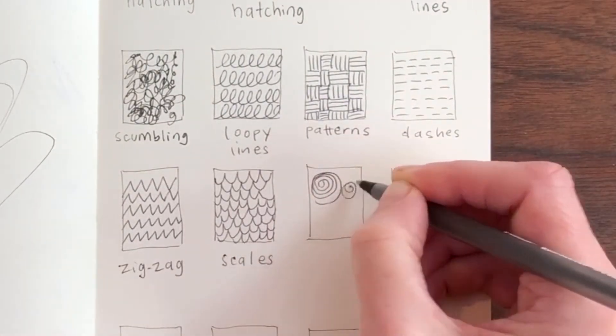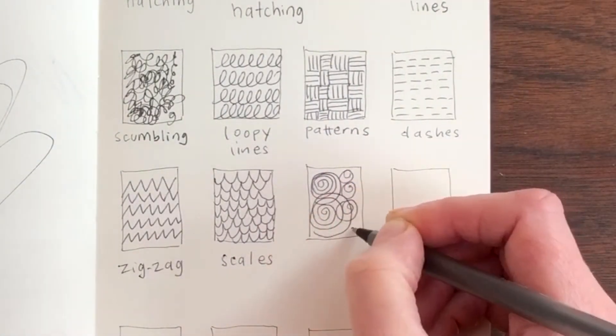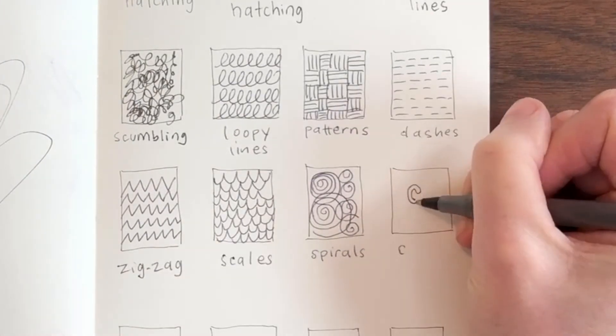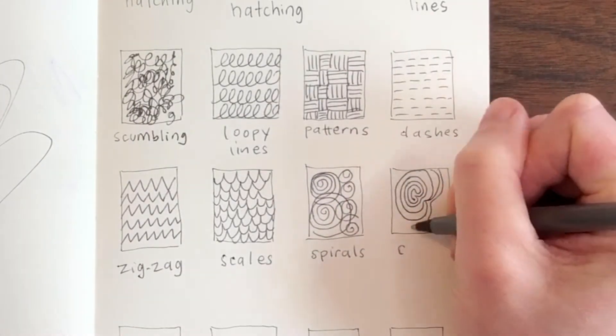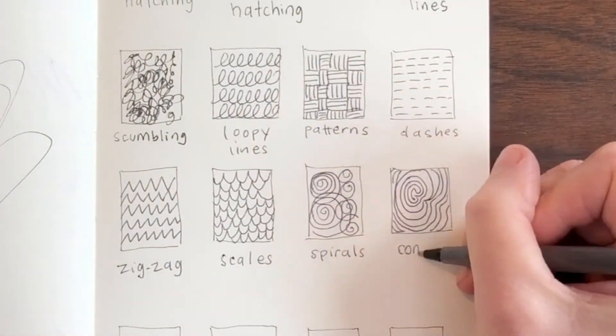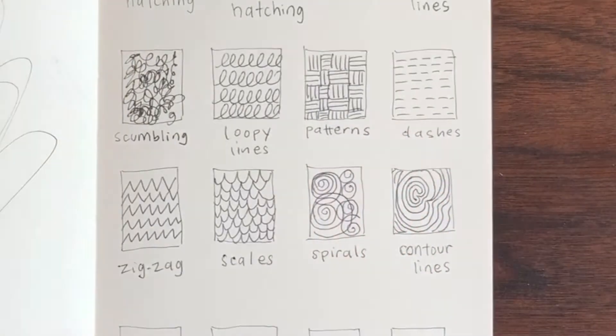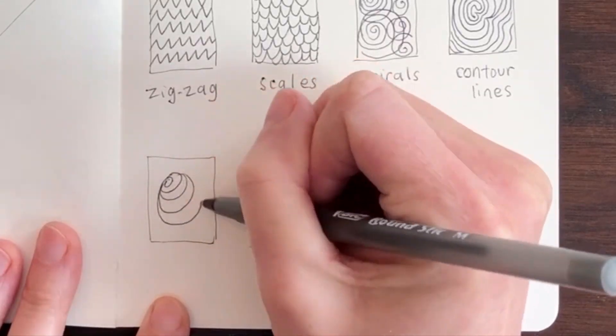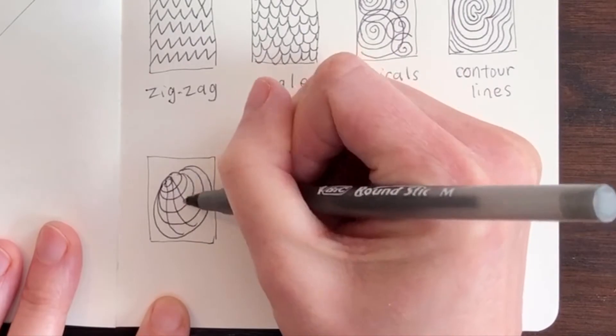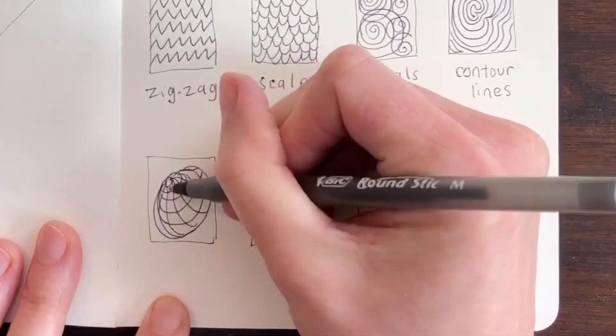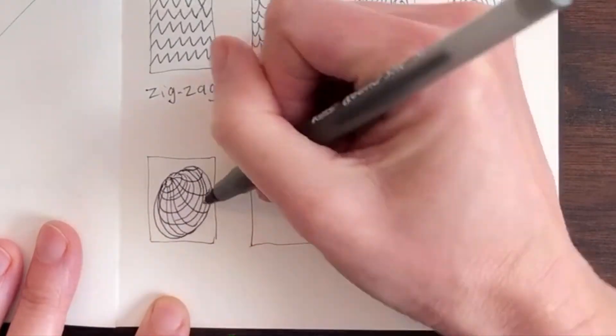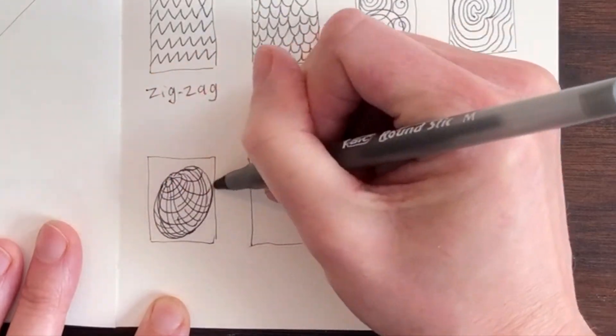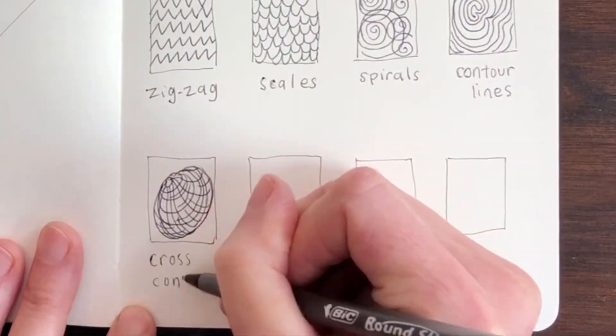A lot of people make spirals when they doodle and you can even overlap them. These are called contour lines. Contour lines trace over and over around a form. These lines are like contour lines because they go around a form but also cross through the form to show that it has dimension. These are cross contour lines.